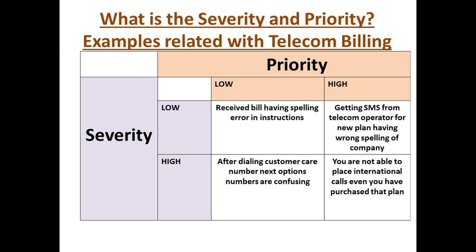High severity and low priority — for example, you dial a customer care number and they tell you to press one for your current plan and press two for a new plan, but when you press one they give information about the new plan and when you press two they give information about the current plan. It is confusing and has high severity because it affects the functionality, but low priority because the customer can try both options. However, it must still be fixed.